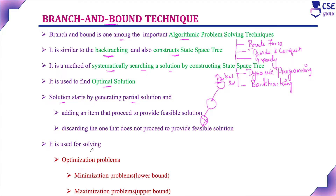Branch and bound technique is mainly used for solving optimization problems. Optimization means either the solution should be maximized or minimized — that is called an optimization problem. There are two categories: minimization problem and maximization problem. In a minimization problem, the value should be minimized. In a maximization problem, the solution value should be maximized.